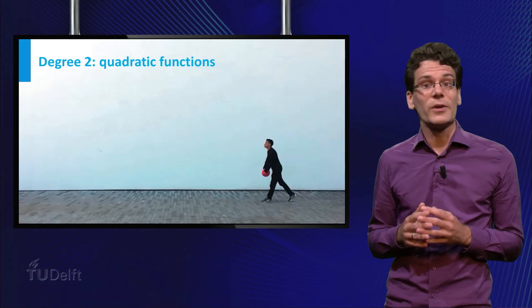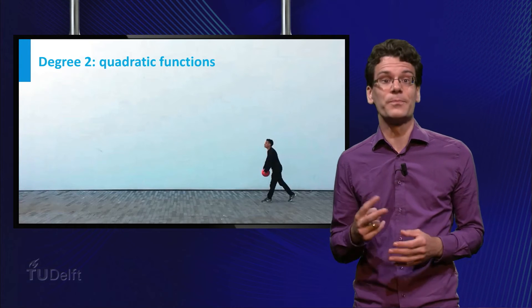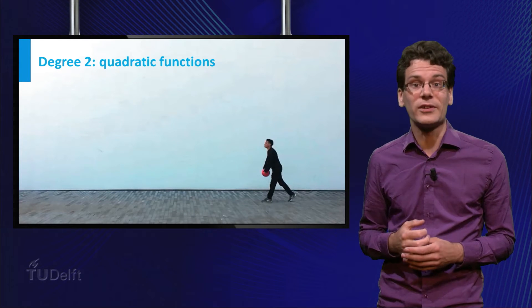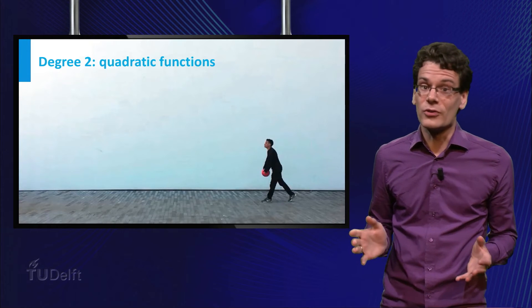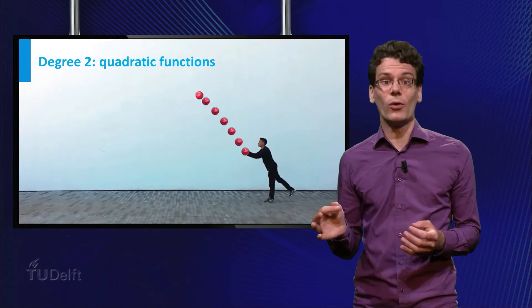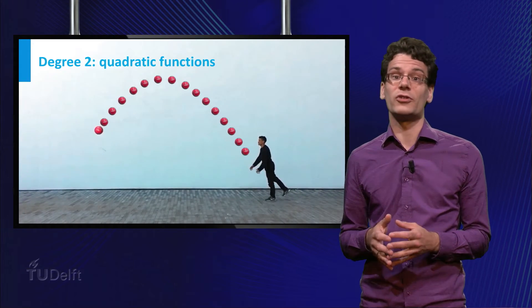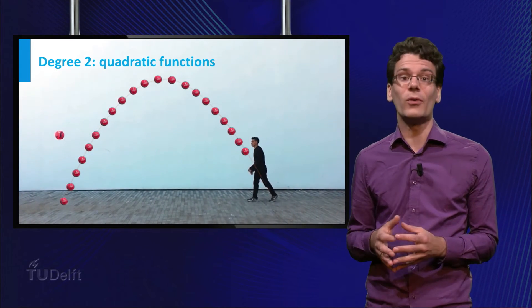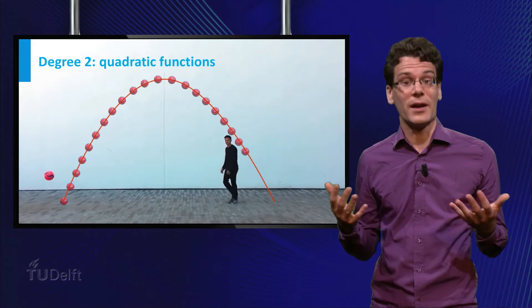Ok, let's go one degree up to functions of degree 2. These functions are called quadratic functions. Quadratic functions also occur in many applications. For example, if you throw a ball, both the height as function of time and the trajectory of the ball can be well described by a quadratic function.